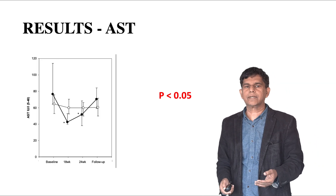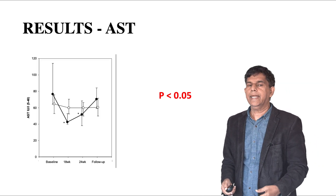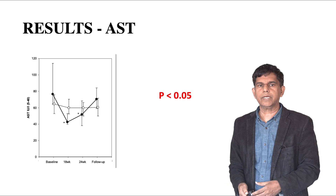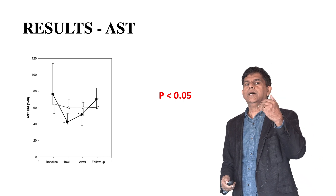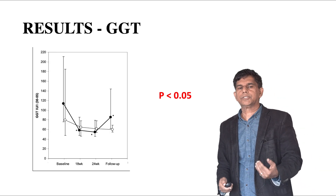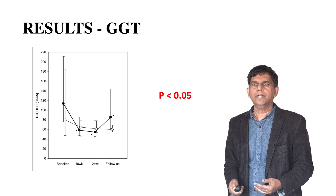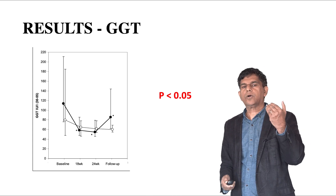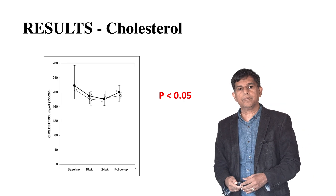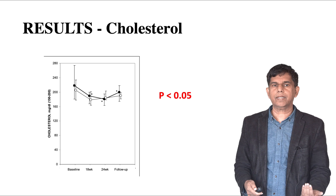When they looked at liver enzymes, ALT decreased tremendously, AST also decreased, and GGT — another liver enzyme — also went down. They also looked at cholesterol levels, which also went down when 10 milligrams of melatonin was given.